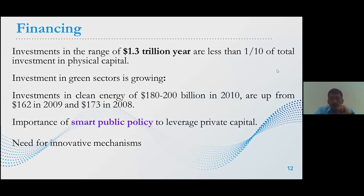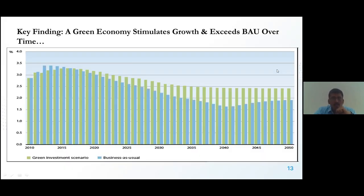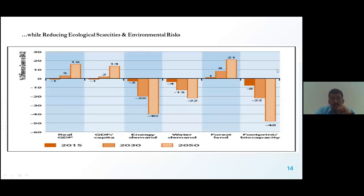Key findings show that green economy growth exceeds the business-as-usual view over time — from 2010 through to 2050. Looking at the data, if we utilize green energy with environmental safety and environmental protection, we can improve on what happened in the past. Focusing on the present with a green economy will be very beneficial, reducing economic scarcity and environmental risk. By 2050, real GDP per capita, energy demand, water demand, forest land utilization, and bio-capacity footprint are the main indicators being tracked.